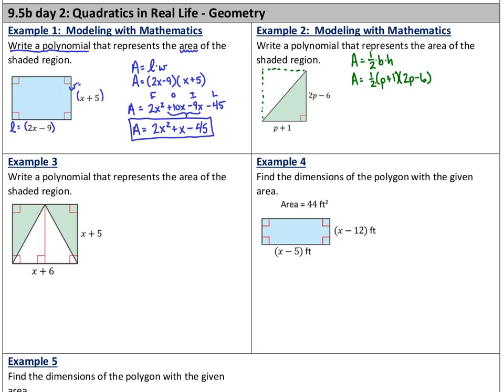My advice to you is to leave the 1/2 and do your foiling first. First times first, I've got 2p times p. Outside, I've got p times negative 6. Inside, 1 times 2p. And last times last is minus 6. We'll combine our like terms in the middle, and then I'll distribute in the 1/2. Half of 2p squared is just p squared. Half of negative 4p is negative 2p. And half of negative 6 is negative 3. There's our expression.